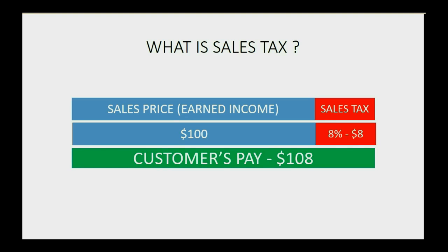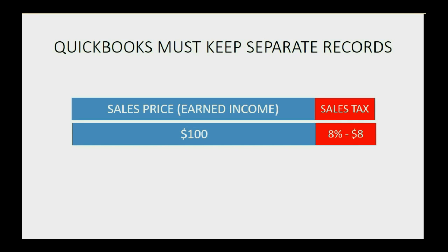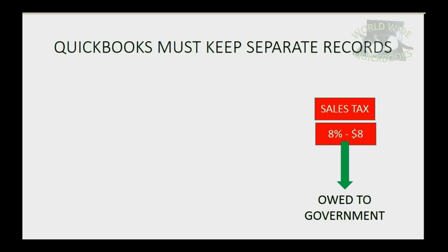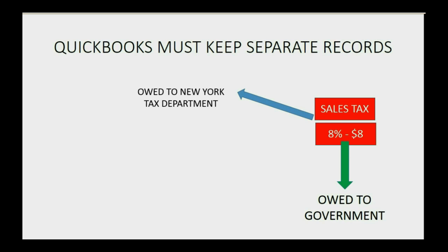The hundred dollars would be recorded as income earned to you, and the other eight dollars you would owe to the government for sales tax. In fact, that eight dollars might be owed to two separate departments of government if you sold in two separate states, and that's what you have to keep track of using QuickBooks Online.